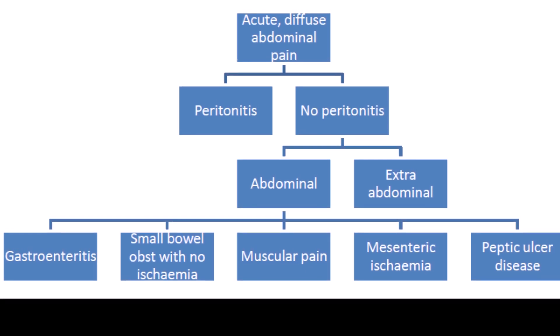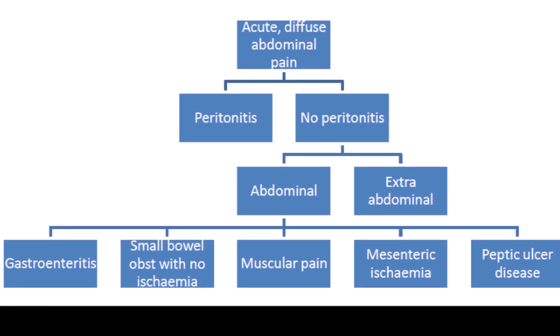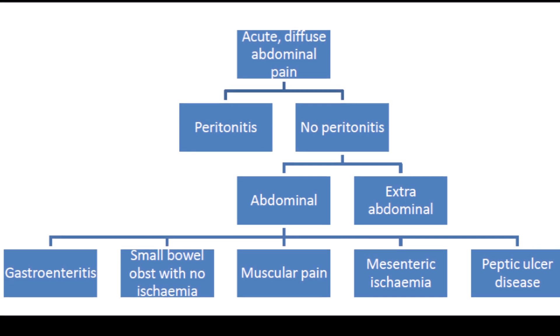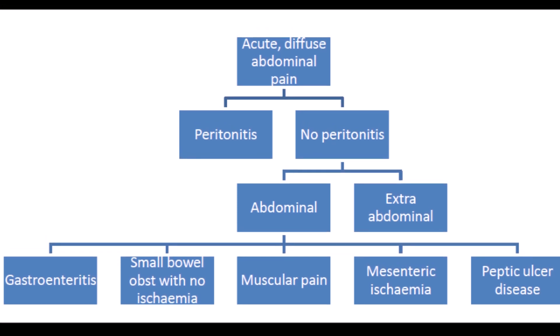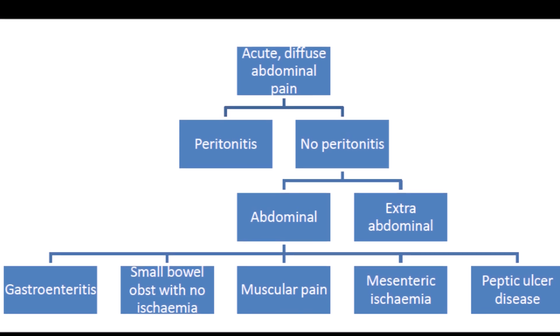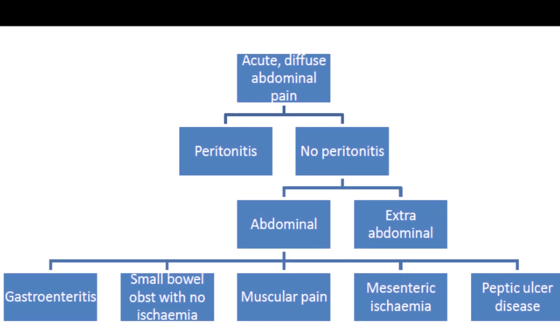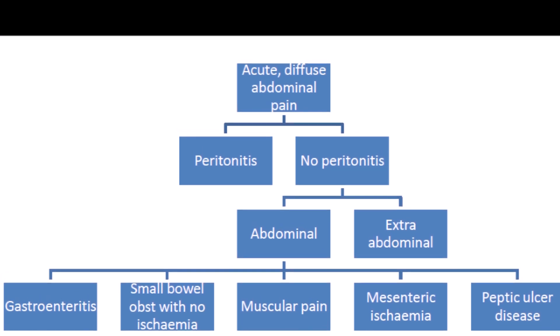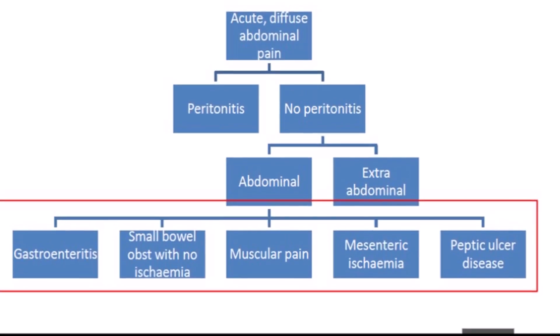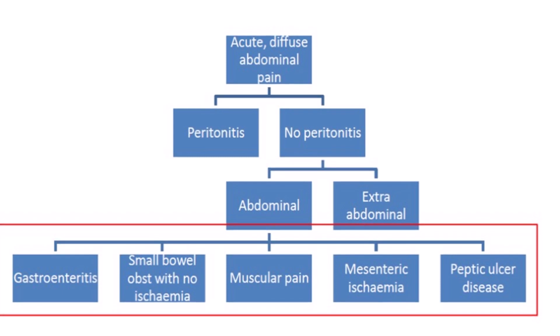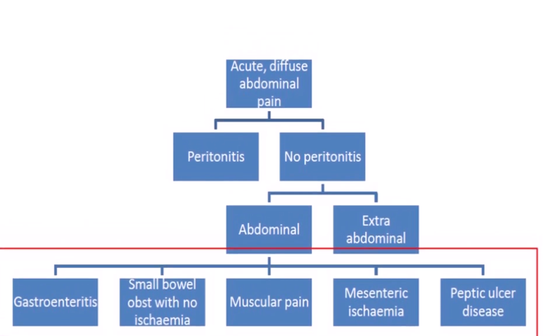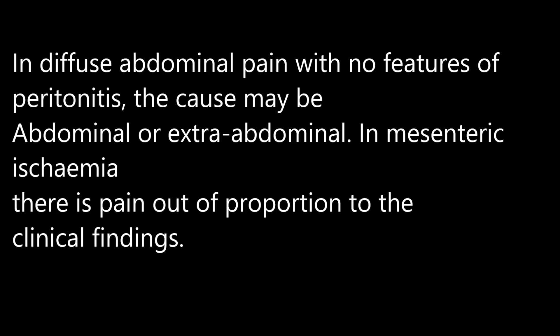In acute diffuse abdominal pain without peritonitis, we distinguish between abdominal and extra-abdominal causes. Abdominal causes include gastroenteritis, small bowel obstruction without ischemia, muscular pain, mesenteric ischemia, and peptic ulcer disease. In diffuse abdominal pain with no features of peritonitis, mesenteric ischemia presents with pain out of proportion to clinical findings.